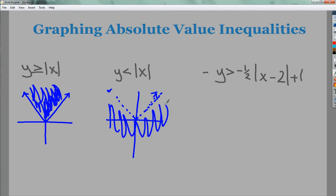Finally, I end up with this gigantic one. I need to divide everything by negative 1 because it starts out with negative y. When I do that, it actually changes the inequality—it flips it. So I end up with y greater than or equal to one half times the absolute value of x minus 2, minus 1.